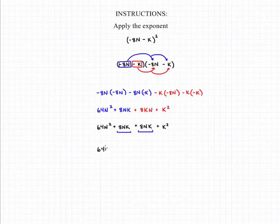And if we combine them, we'll get our final answer: 64n squared plus 16nk plus k squared.